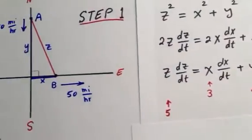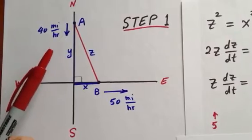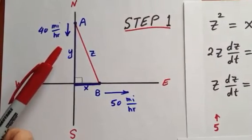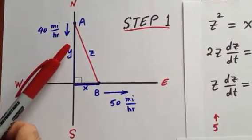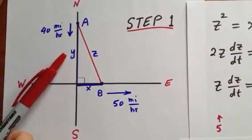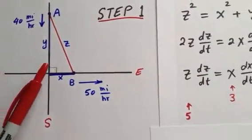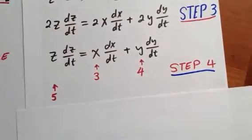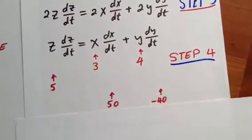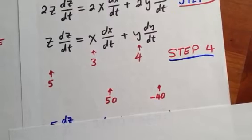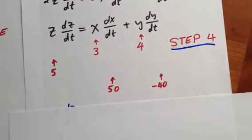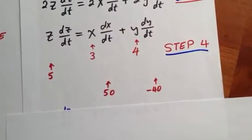What about dy/dt? dy/dt is the rate of change of y. Notice that y is getting smaller, so its rate should be negative, minus 40 miles per hour. We plug in 50 for dx/dt and minus 40 for dy/dt.